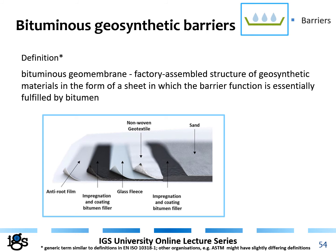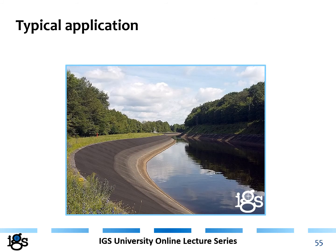The second group of geosynthetic barriers are bituminous geosynthetic barriers — factory-assembled structures where the barrier function is essentially fulfilled by bitumen. The bitumen is sprayed on one or more geotextile layers or other components and formed into an entire sheet. Typical applications include canal lining systems and other barrier applications.